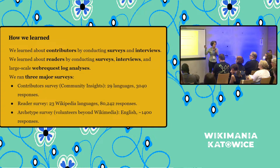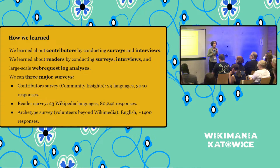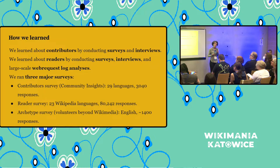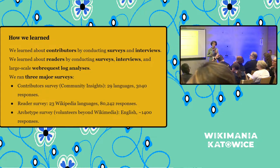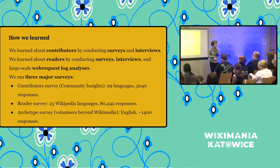Over the past 12 months, we learned about contributors by conducting surveys and also doing interviews. Contributors is broadly defined: editors, admins, organizers, and some of the other groups on the projects. We learned about readers by conducting surveys and interviews. And on top of that, in the case of readers, we have access to web request logs — the logs generated each time you request a page on the Wikimedia projects. On average, we receive 160,000 requests per second, so there is a lot of data coming in about people and machines accessing Wikimedia projects, and we analyze that.